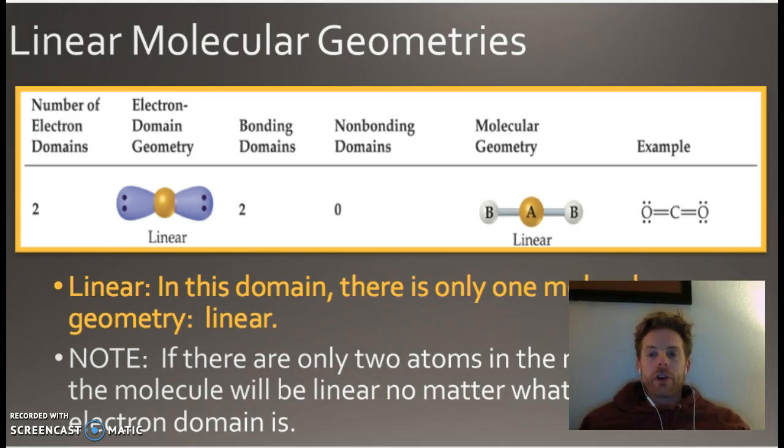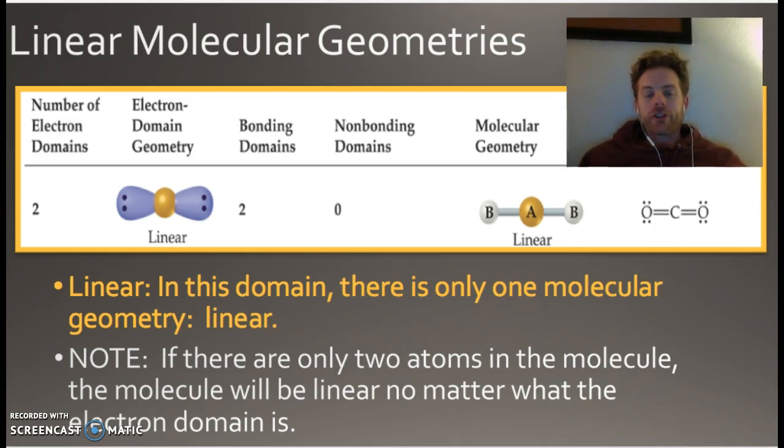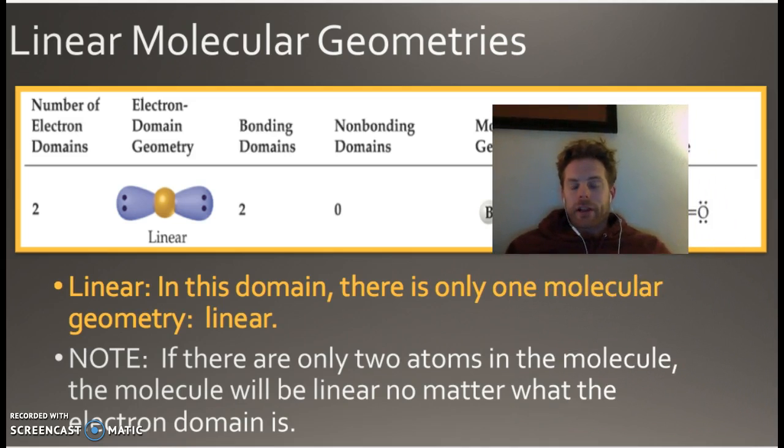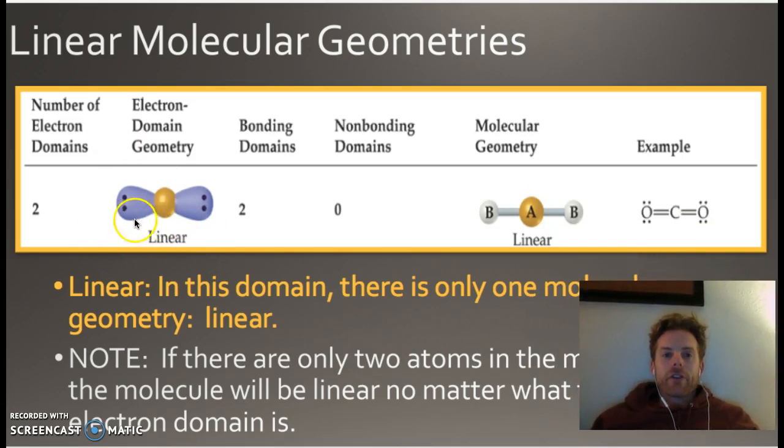So this is kind of the difference here, is we take that same kind of shape, but we ignore the lone pairs. So let's look at the linear ones. Well, the linear one's pretty easy, because that's it. There's only one molecular geometry, and that's linear. If there are two atoms in the molecule, it's going to be linear. That's it. That's just what it is. So there's nothing special about this. This is the exact same. So here's the electron domain. Bam, bam. Bonding domains, there's two of them that are bonding, one and two. And there is zero non-bonding. If there was another non-bonding, then it wouldn't be linear.